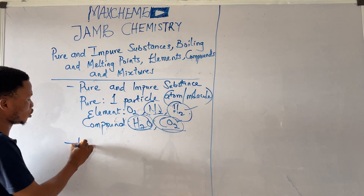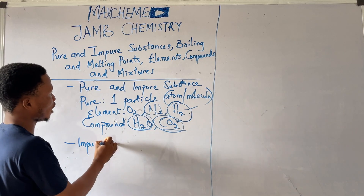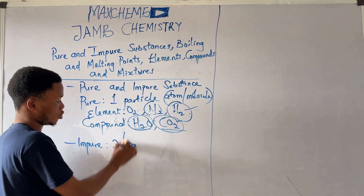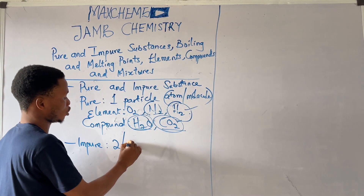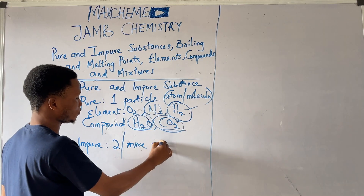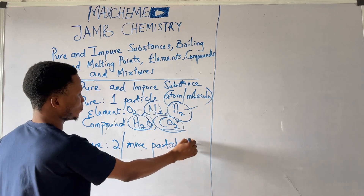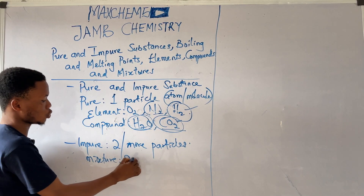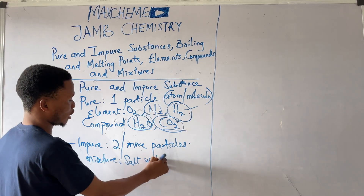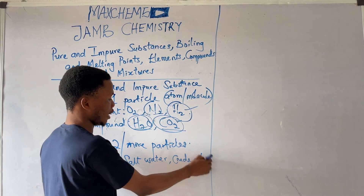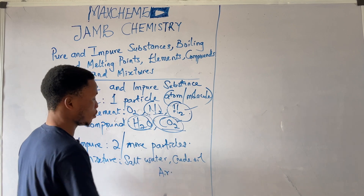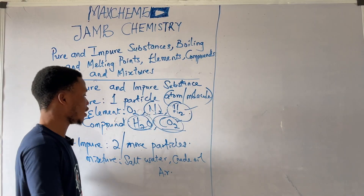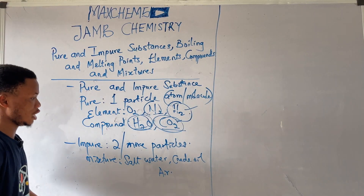While impure substances are substances that have two or more particles in them. Examples are most of our mixtures — particles like salt water, like crude oil. These are impure substances because they have two or more particles in them.